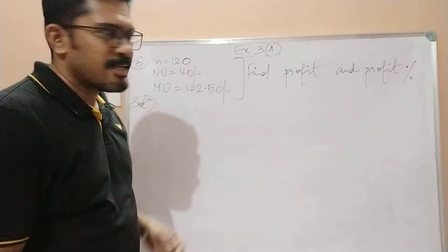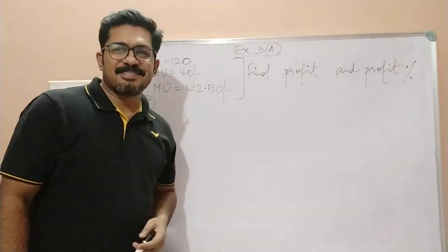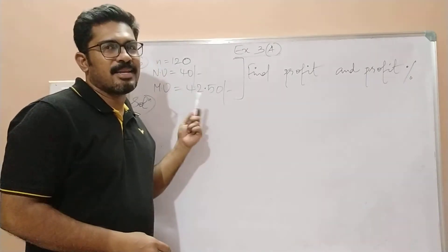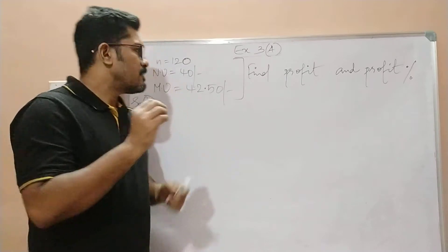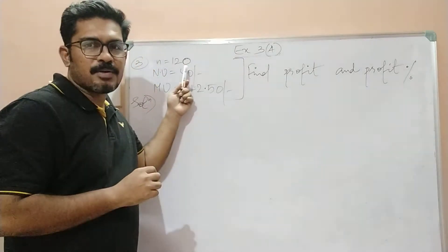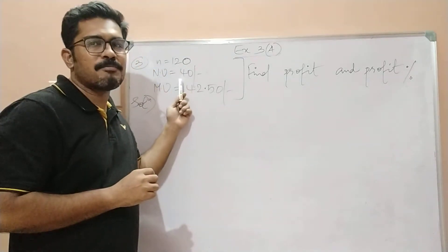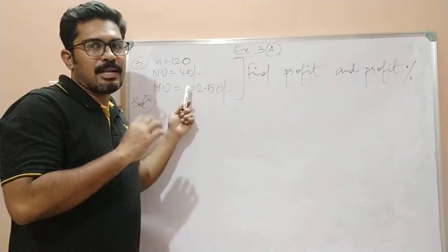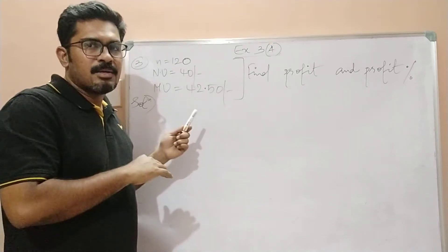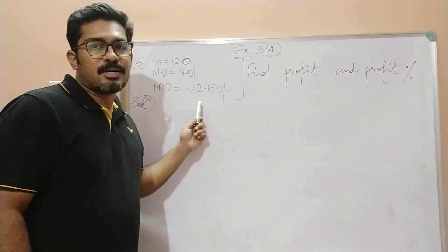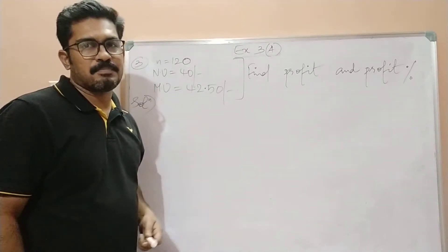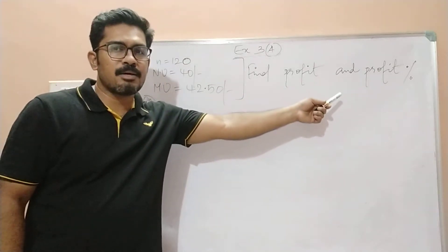Namaste friends, we are going to solve exercise 3A question number 3. The question says a person buys 120 shares of a company at a nominal value of 40 rupees each, and later on he sells each of these shares at a market value of 42 rupees and 50 paise. You have to find the profit as well as the profit percentage.